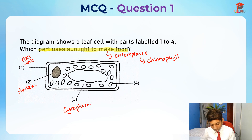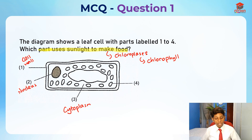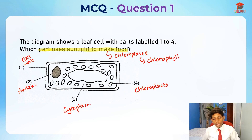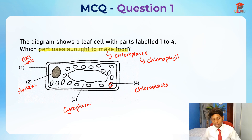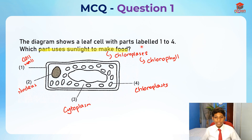We still haven't seen any chloroplasts, right? But the last part is actually chloroplasts. As you can see, this disc-like structure is actually the chloroplasts. So the answer is chloroplasts, which is option number 4.